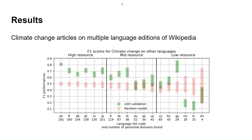Since our focus is on all languages, here we see a sample of model performances on different languages, from high, mid, and low-resource ones. Unfortunately, the model performances decay with lower and lower resources, which can happen because there is not enough information for the model to learn, or because editor aptitude is different in low-resource languages.